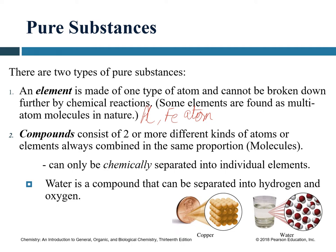A compound is also a pure substance, but it consists of atoms of two or more elements always combined in the same proportion. For example, water is composed of two atoms of hydrogen and one atom of oxygen (H₂O). Pure water from anywhere in the world will always have this composition. The major difference between an element and a compound is that an element consists of only one type of atom, while compounds consist of two or more kinds of atoms.